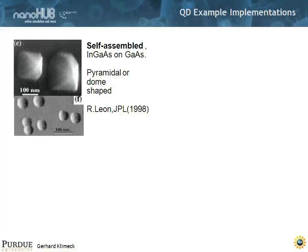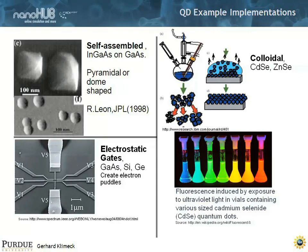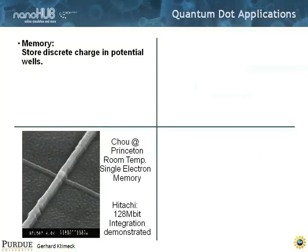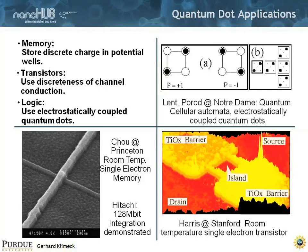Here are some example implementations of quantum dots, which are in a sense also RTDs but with three-dimensional confinement. Here's some indium gallium arsenide dots in gallium arsenide, grown as self-assembled dots. Here are some quantum dots as gated structures, some colloidal quantum dots — you may have seen fancy images of cadmium selenide dots that emit light at different frequencies depending on their size. There are applications in single electron memory, single electron transistors, and logic based on quantum cellular automata.